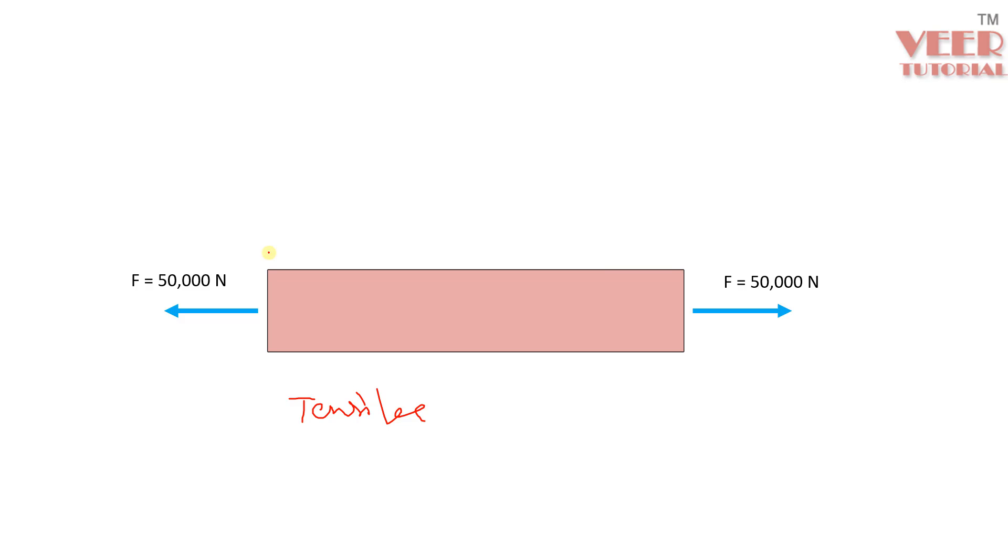But when you solve this problem in FEA software, in any software, we need to apply a constraint or we can say boundary condition at least at a single point or any single phase. We must apply a boundary condition, otherwise, the analysis will not run. So here, you can see right now, there is no boundary condition because we are going to apply a force from both directions. So first, we need to simplify this geometry.